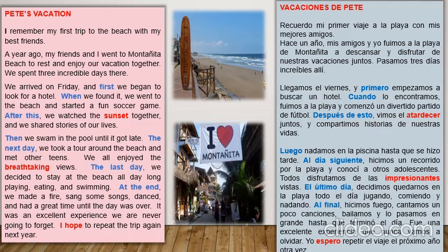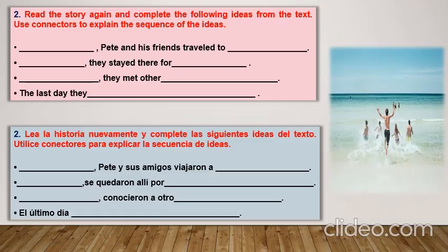Los conectores de secuencia: cuando, después de esto, luego, al día siguiente, el último día, al final, están indicando el orden de los eventos. En la siguiente actividad, lea la historia nuevamente y complete las siguientes ideas. Tienen que utilizar los conectores para explicar la secuencia de ideas como indica el texto.